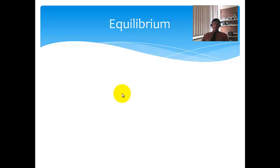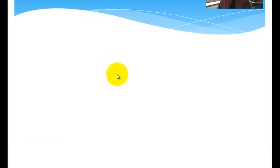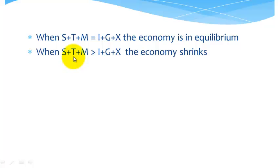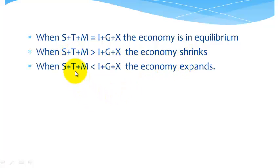Now, let's have a look at what happens in equilibrium. When savings plus taxes plus imports are equal to investment plus government spending plus exports, the economy is in equilibrium. In other words, the leakages equal the injections. What about when the leakages are more than the injections? Well, there's more money going out, therefore the economy shrinks. Conversely, when the leakages are less than the injections, the economy expands.